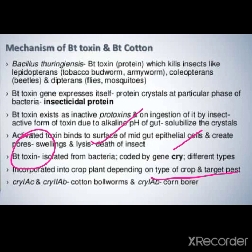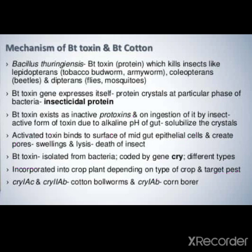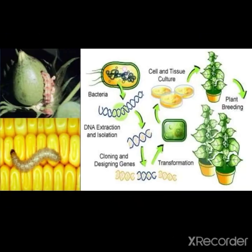For example, cry 1 ac and cry 2 ab - e cotton ball worms jo ne, jodho cotton nu kaffi nuksan puchande ne, unna vasthe use kite jande ne. And jodha cry 1 e bhi hai, o corn borer hai. Corn boreran vasthe avala gene use kita jandha hai, jo corn nu khandha hai. So, this is the main logic behind this.